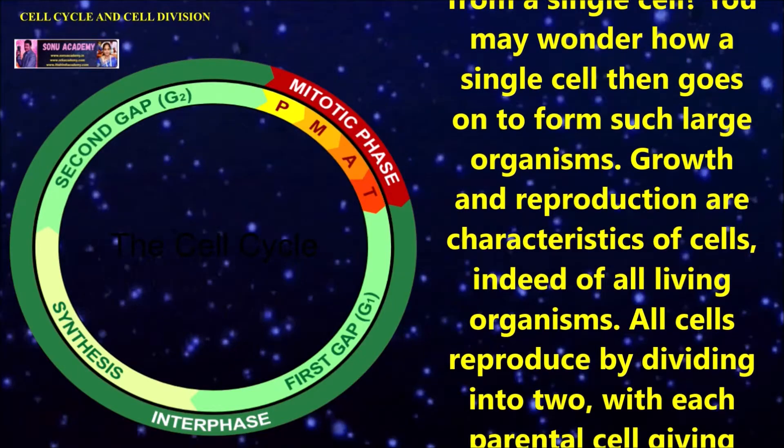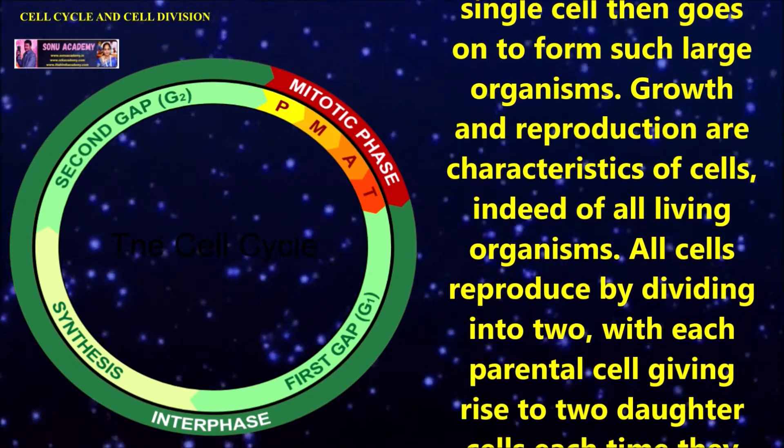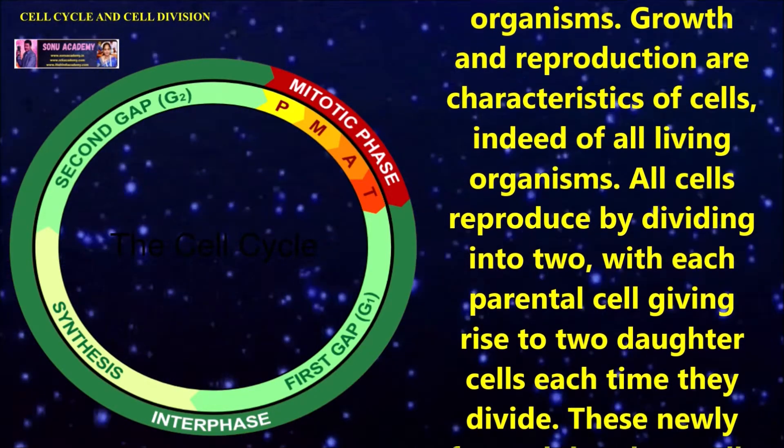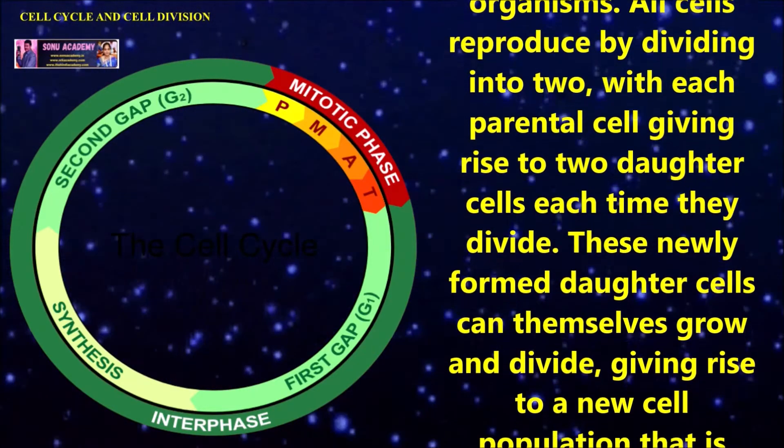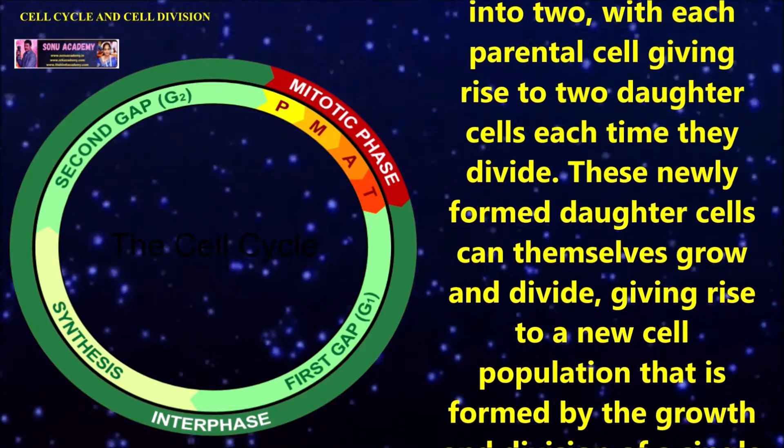Growth and reproduction are the characteristics of cells, indeed of all living organisms. All cells reproduce by dividing into two, with each parental cell giving rise to two daughter cells each time they divide.